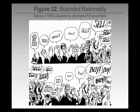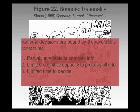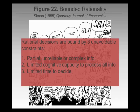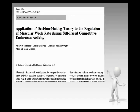Now we come on to decision-making. Even if we agree that RPE is an important regulator of pace and an important perception that causes us to make decisions, how do we actually make those decisions? One theory — probably one of the oldest — is bounded rationality. The idea is that decisions are essentially constrained by three things: you have partial, unreliable or complex information; you have limited cognitive capacity to deal with all that information; and you have limited time to decide.